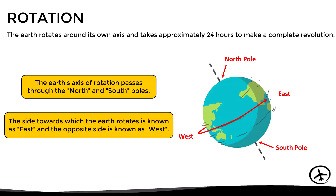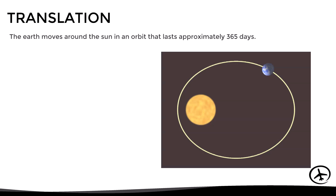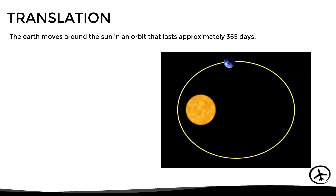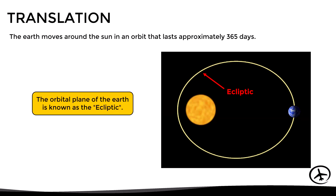Apart from this rotational movement, the earth also moves around the sun in a movement called translation. It takes around 365 days for the earth to make a complete elliptical orbit around the sun, and the orbital plane in which the earth moves is known as the ecliptic plane.